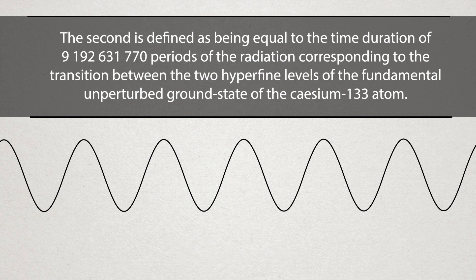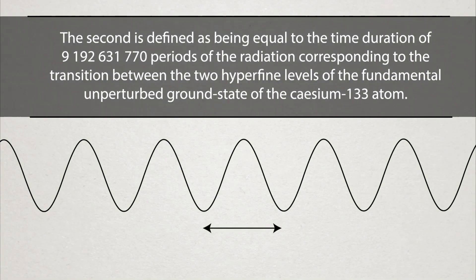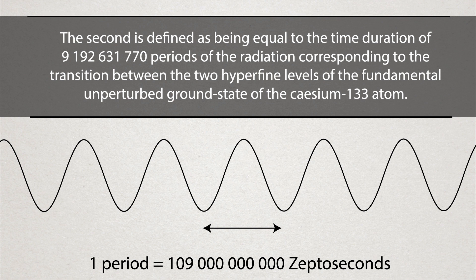But these latest measurements are in another league altogether. One period of the same radiation that defines a second would take 109 billion zeptoseconds.